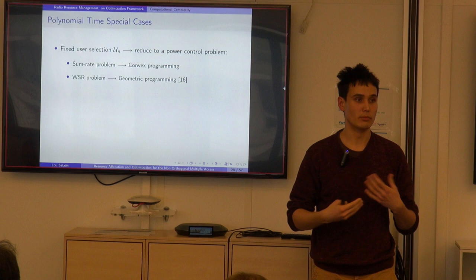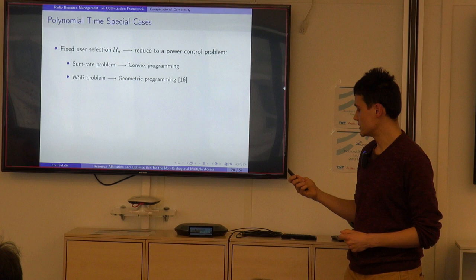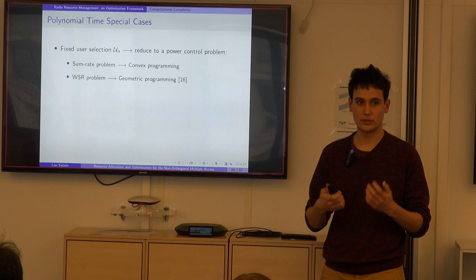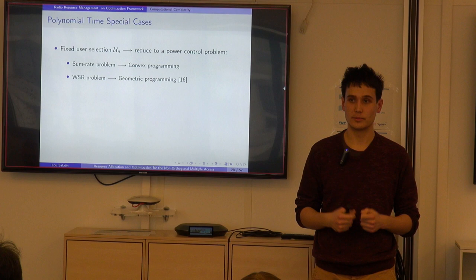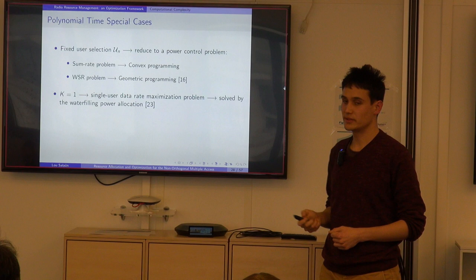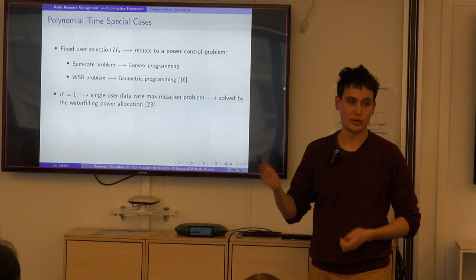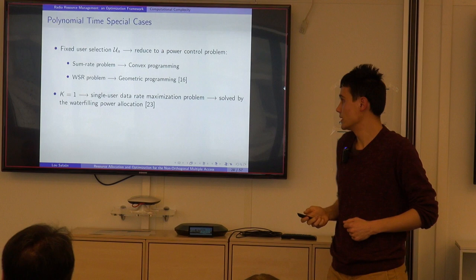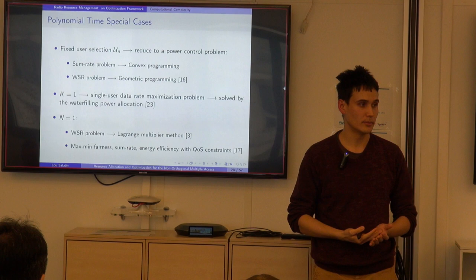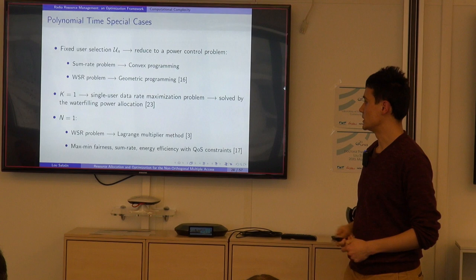In some special cases, the problem becomes easier and polynomial-time solvable. If the user selection U_N is fixed, it reduces to a power control problem solvable by classical optimization methods. If there is only a single user in the system, the well-known water-filling power allocation maximizes the single-user data rate. If there is only one subcarrier, various methods can handle different constraint and utility combinations.